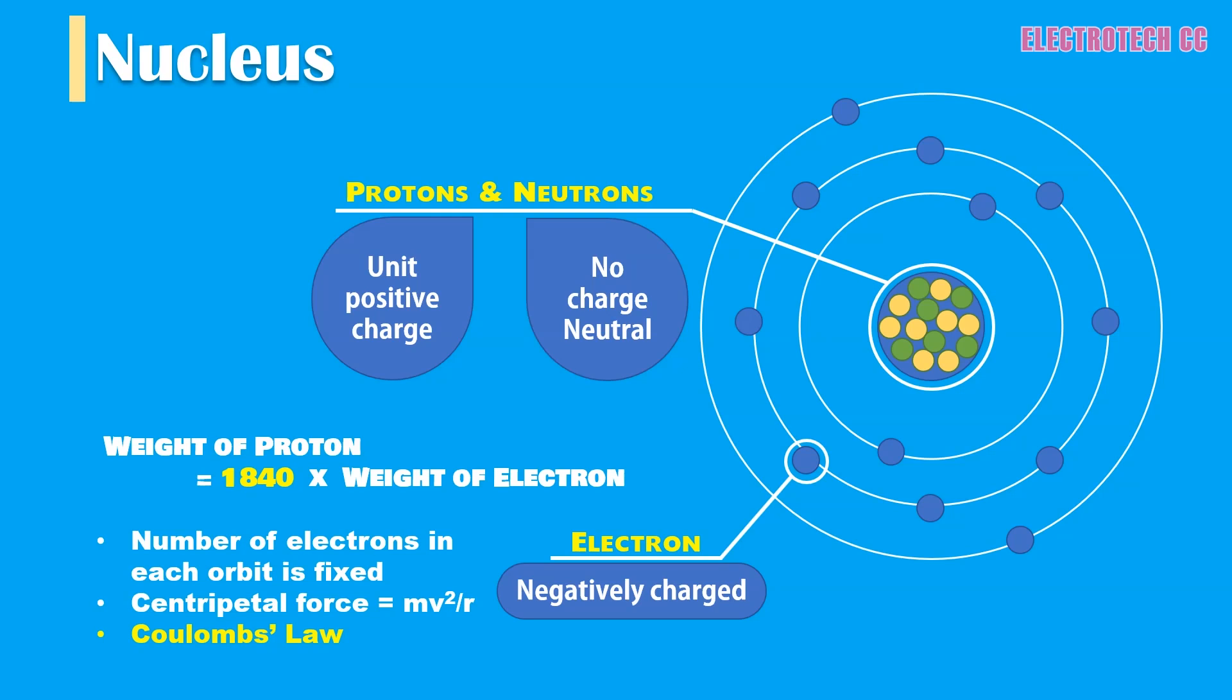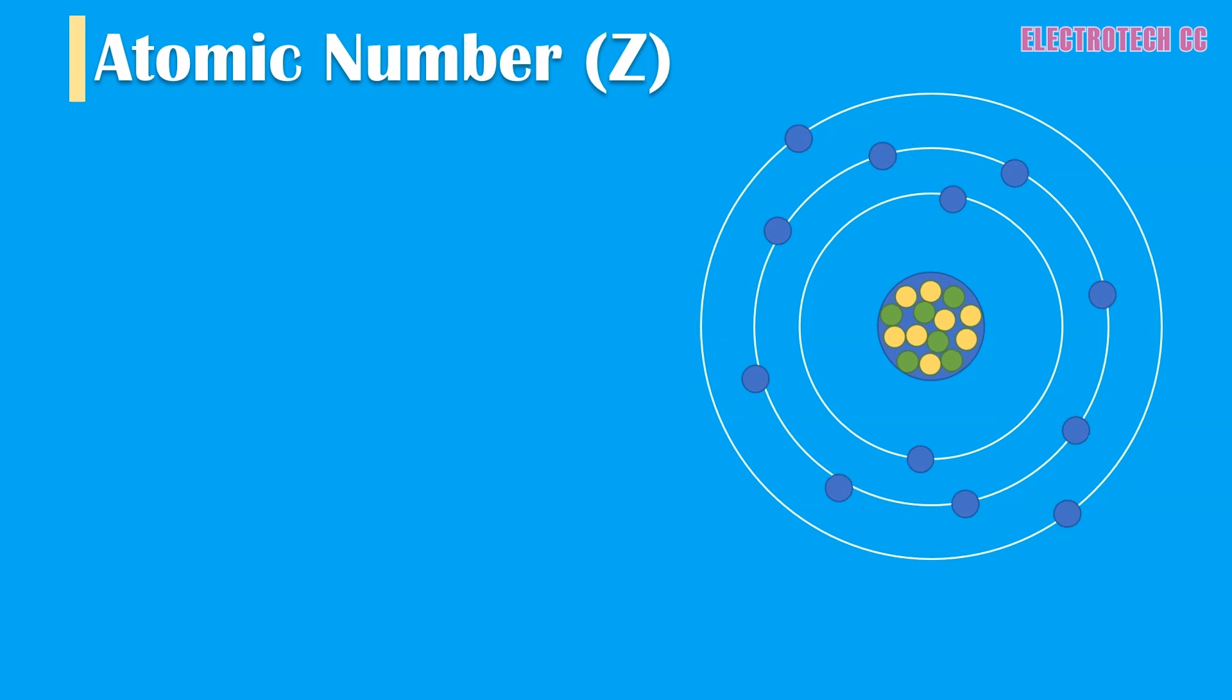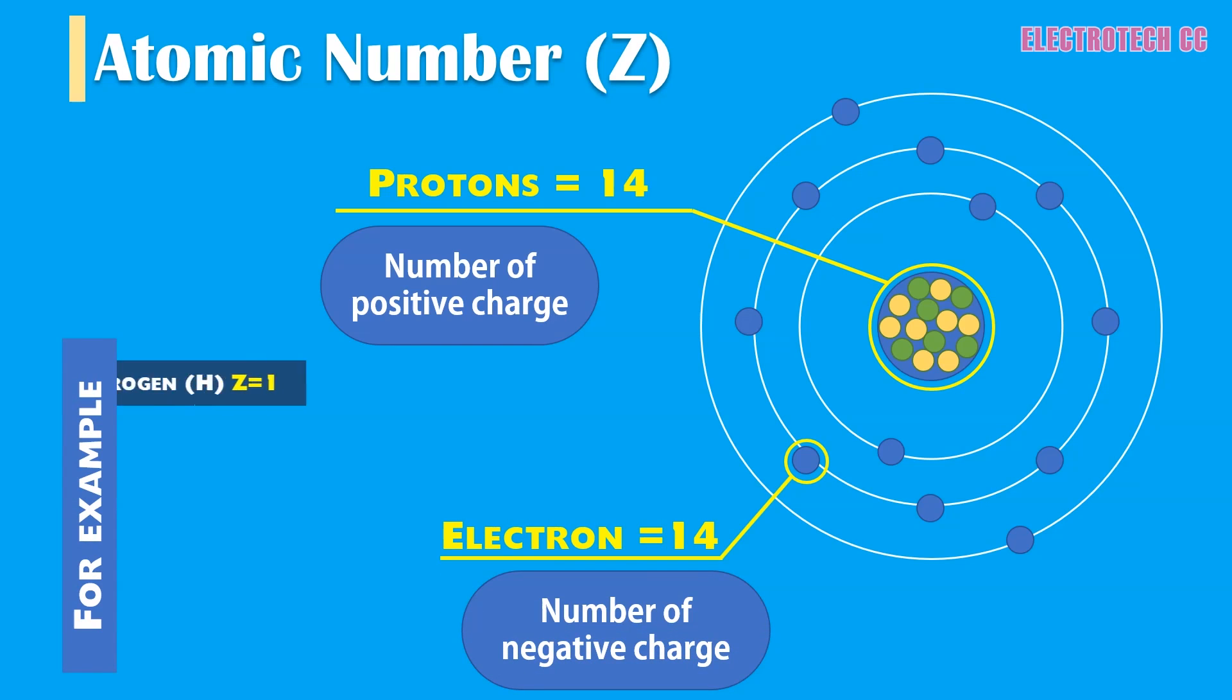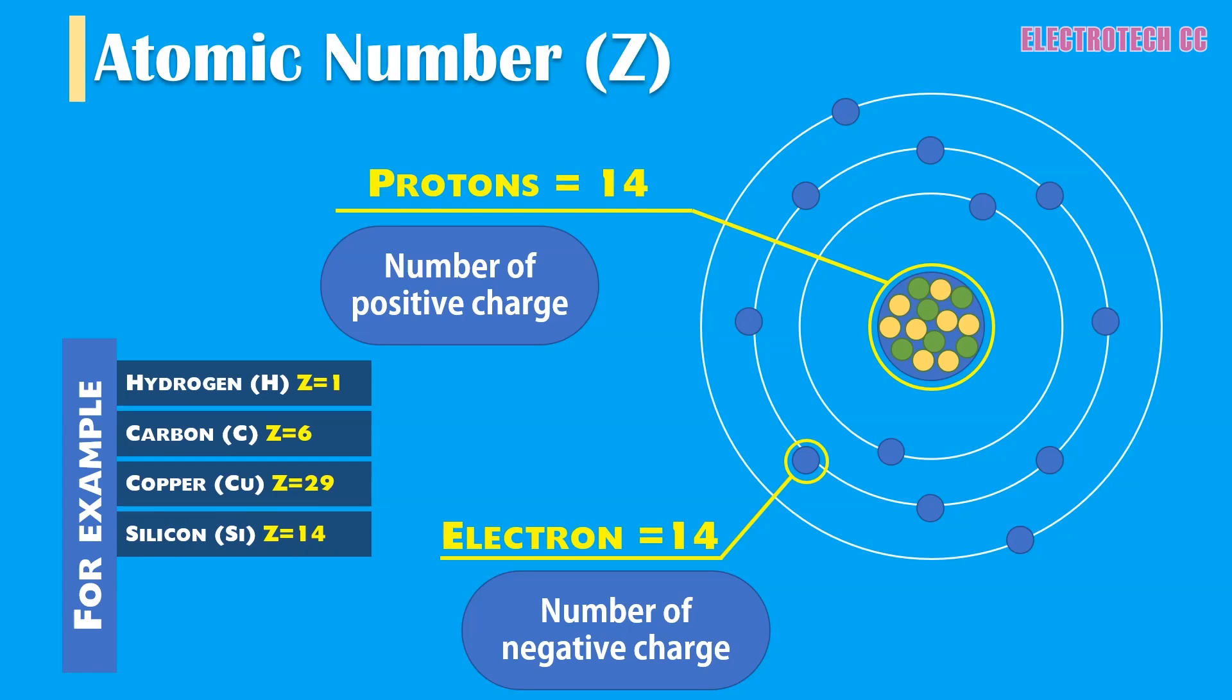The most important parameter in atomic structure is atomic number. Atomic number, Z, is equal to the number of protons or electrons contained in an atom. For example, hydrogen atom has one electron in the nucleus, hence Z equals 1 for hydrogen. For carbon, Z equals 6. For copper, Z equals 29. For silicon, Z equals 14. For germanium, Z equals 32.